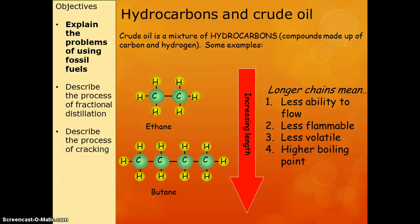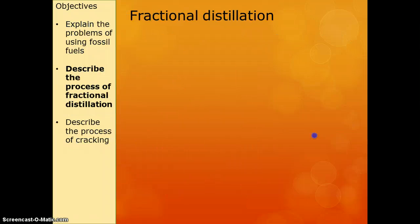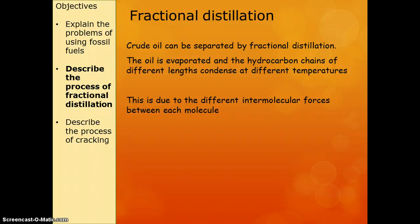Fractional distillation is a process by which we separate crude oil into different length hydrocarbons. We call those different length hydrocarbons fractions. The way we do this is we take the crude oil and we heat it up until it becomes a gas, and then we put it into a big tall column.